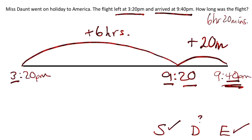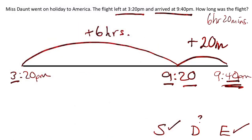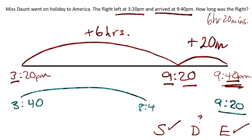You add the full hours that you can because sometimes the minutes in the start time will be ahead of the minutes in the end time. For example, if the question was actually 3.40 to 9.20, I couldn't add 6 hours — I couldn't go to 9.40 because it's further than the end time. So I'd have to go to 8.40 and then go on from there. I hope that makes sense.